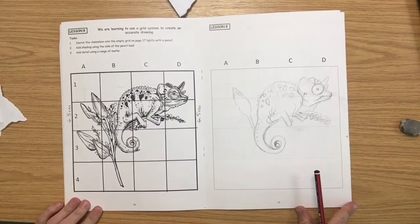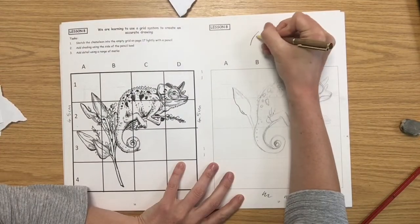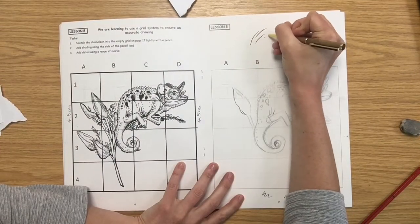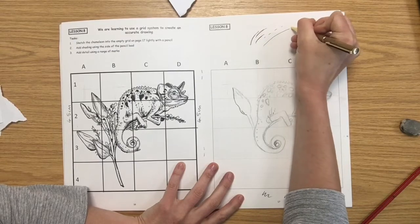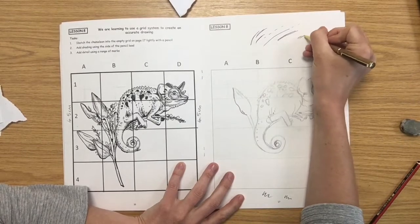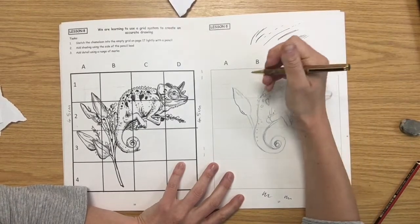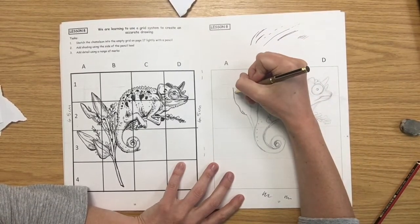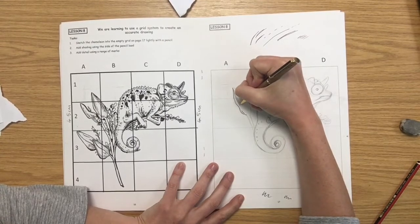I'm using a simple biro and just exploring my mark making technique at the top of the page. It might be worth you flipping back to our first lesson where you completed the tiger to get an idea of what marks you can create and what might work when you're adding your marks to your chameleon.